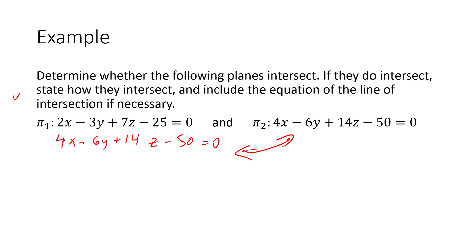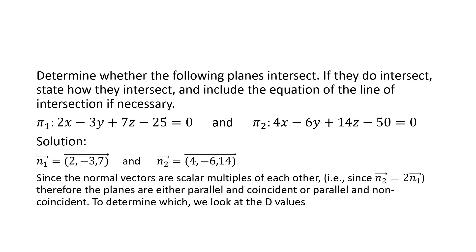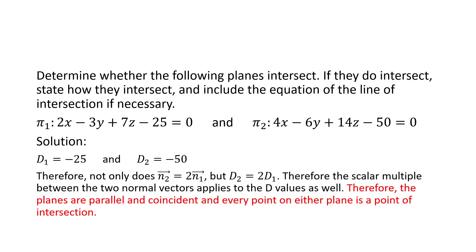If you want to think about it more formally, you can say the normal of the first plane is (2, −3, 7) and the normal of the second plane is (4, −6, 14). Since the normal vectors are scalar multiples of each other, the planes are either parallel and coincident or parallel and non-coincident. To determine which, look at the d values. The second normal vector was 2 times the first normal vector, and similarly, the second d value was 2 times the first d value. That means you have parallel coincident planes with infinite points of intersection.